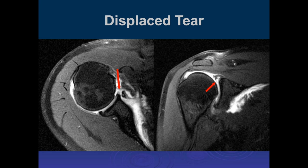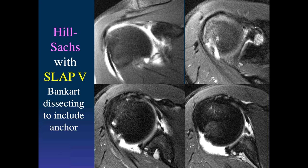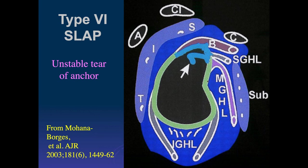Here's another superior labral tear extending anteriorly to involve the anterior labrum — another Type 5. This patient also had a Hill-Sachs lesion and an anterior labral tear. Type 6 is an unstable tear — usually a very irregular superior labral tear with an unstable biceps. It differs from Types 2 and 4: Type 2 is a partial biceps tear that remains basically stable, Type 4 is a longitudinal biceps tear, and Type 6 is an unstable superior labral tear.